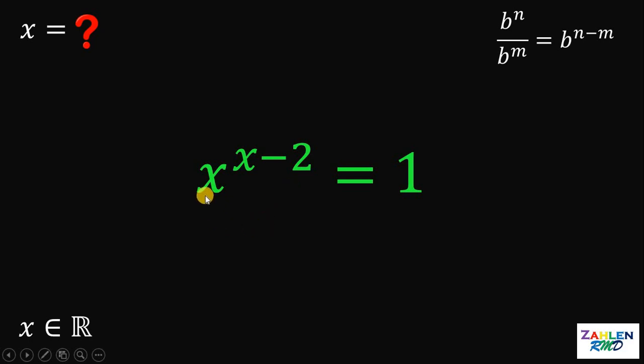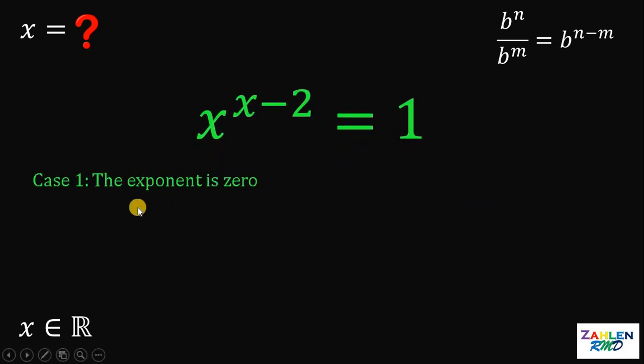We have an equation x raised to x minus 2 equals 1. Here, we have two cases. Case 1 is the exponent must be 0. For the left hand side to be equal to 1, its exponent must be equal to 0.